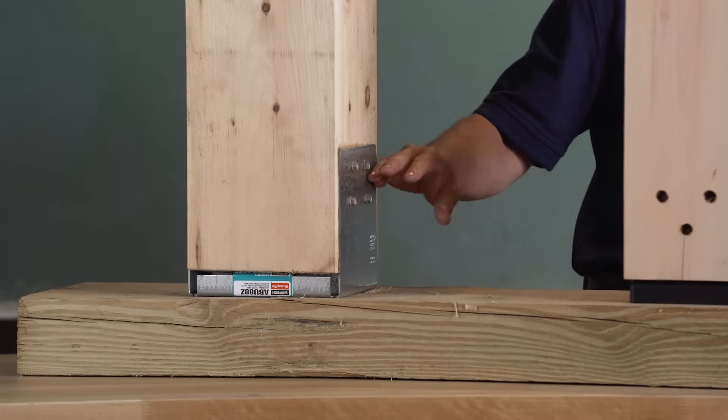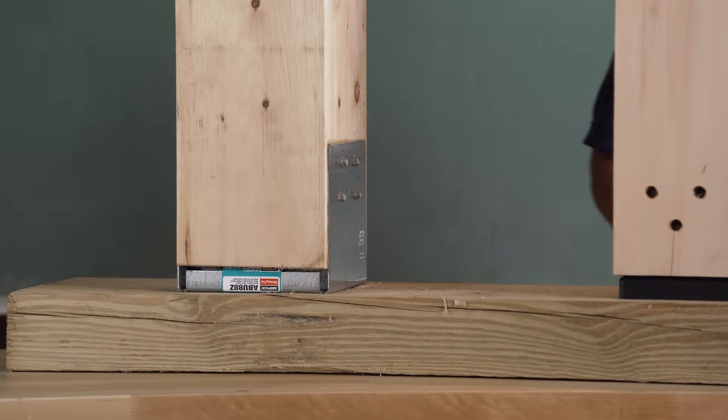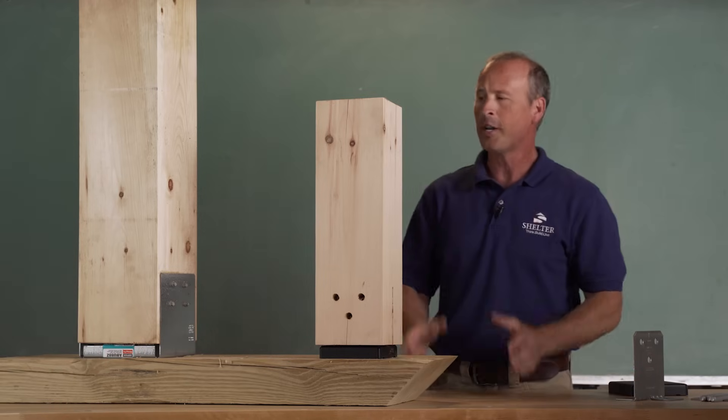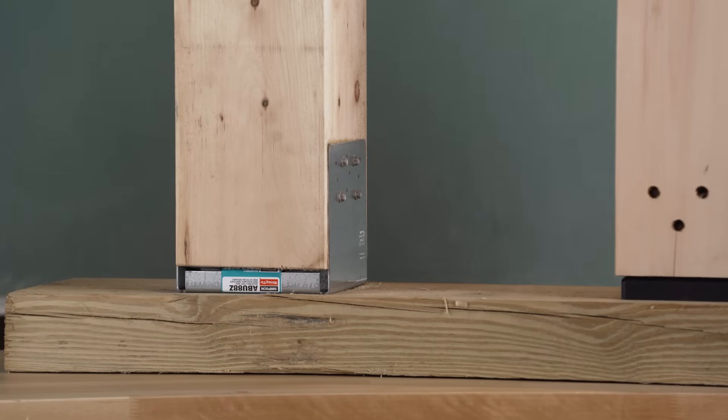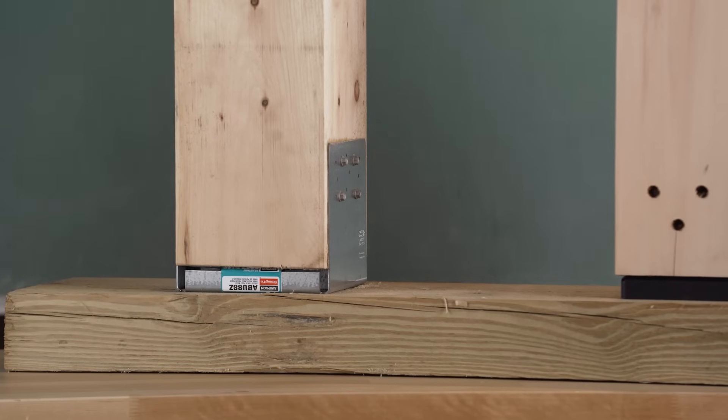This base is a little bit simpler in terms of installation. You don't really have to do anything to the post. You just get the post base positioned where you want it, drop the post in and then install these screws that Simpson Strongtie also provides to anchor the post.